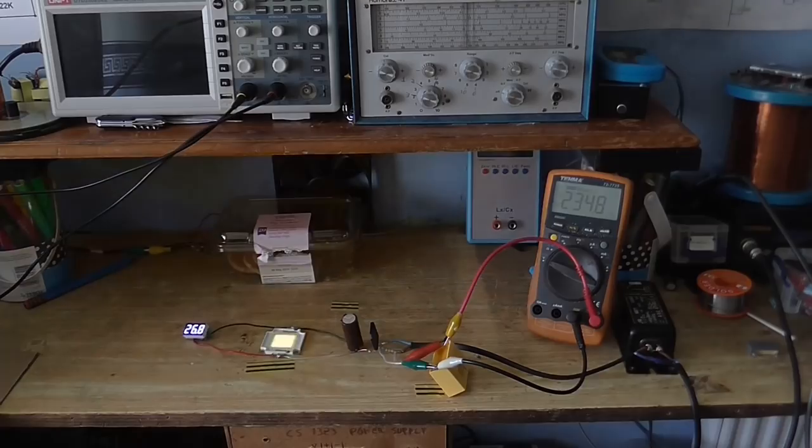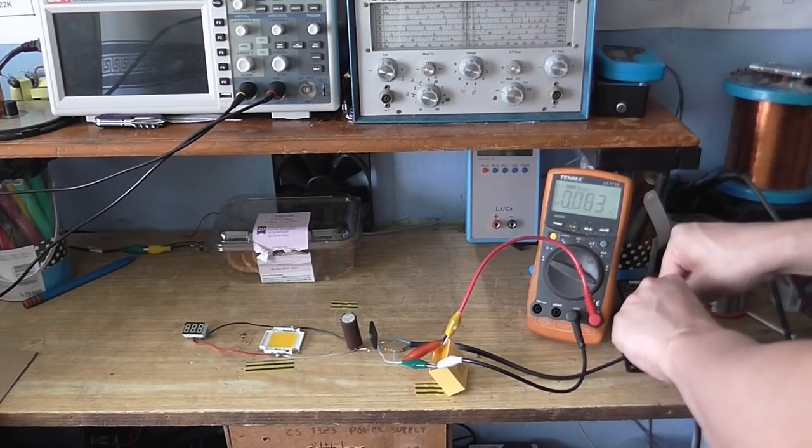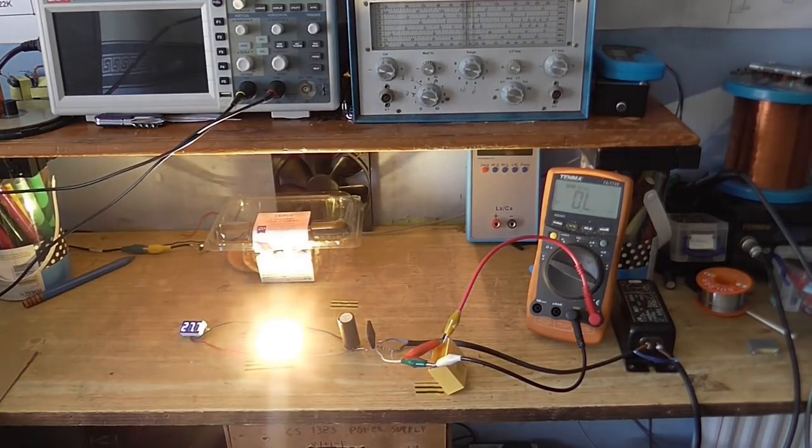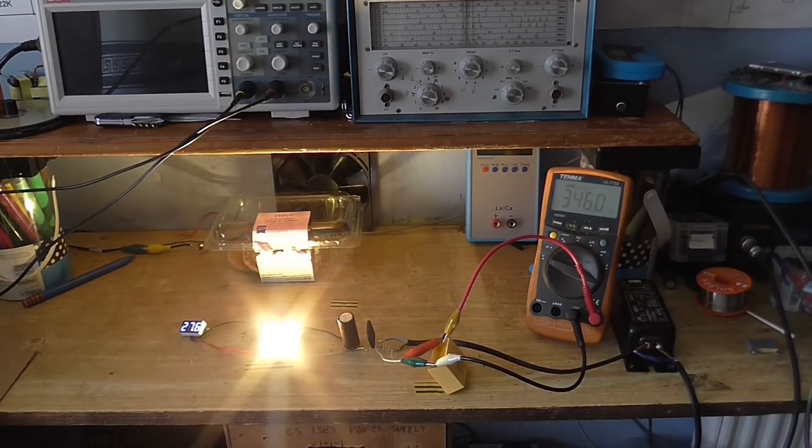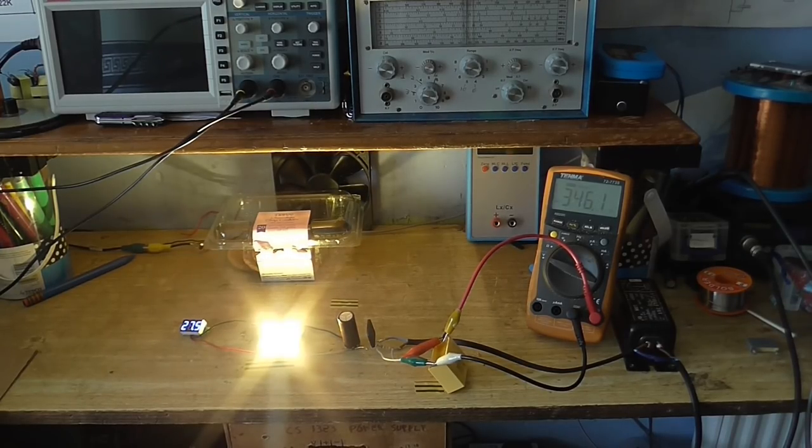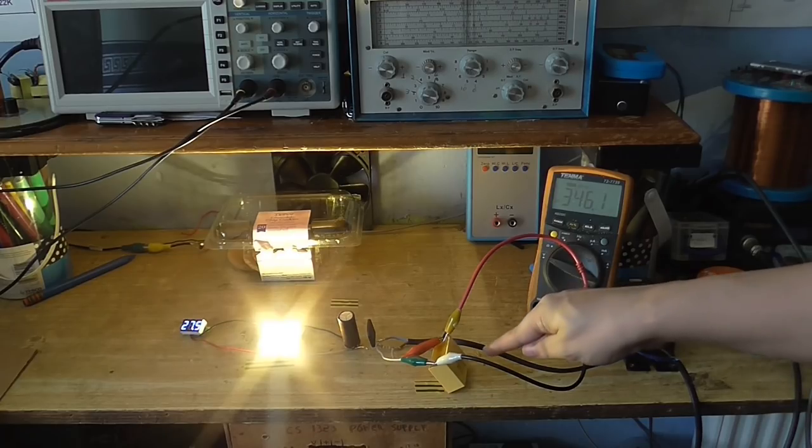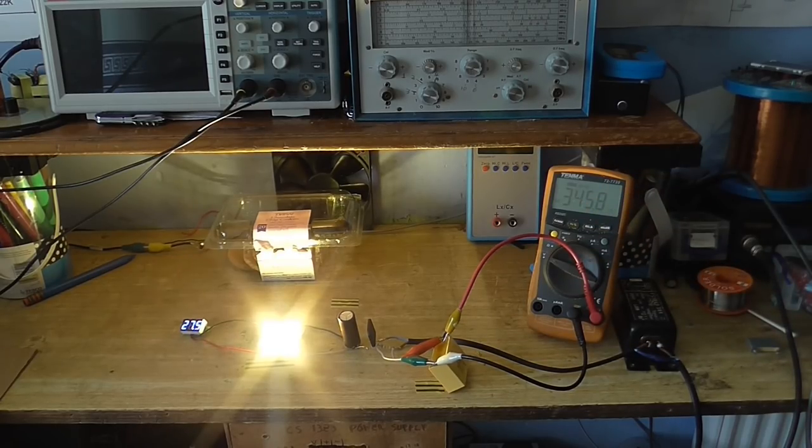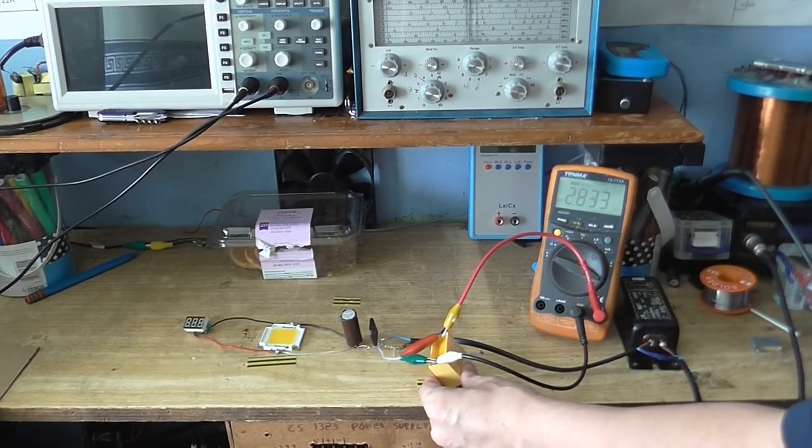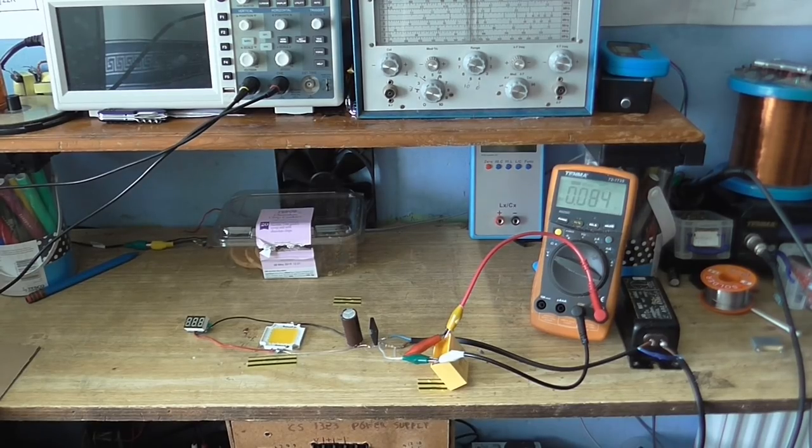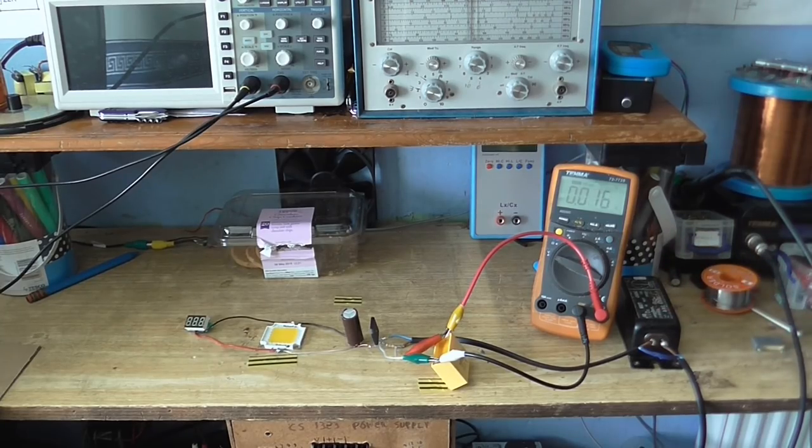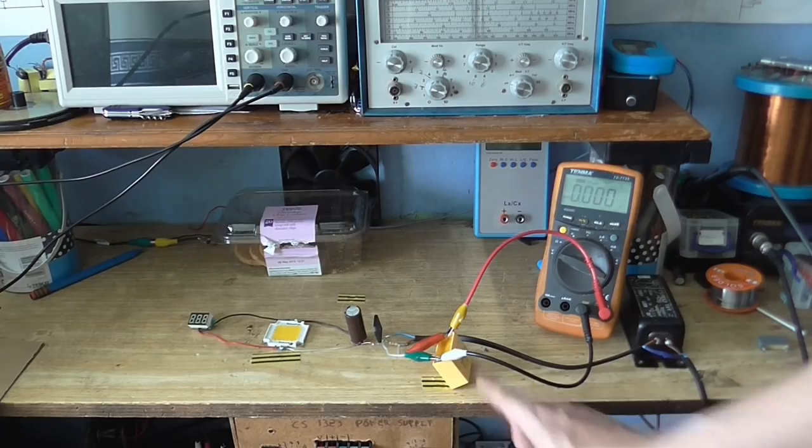But that was with the choke not in the circuit. So, I'm going to unshort the choke and plug it in again. So, this is with the choke. And you can see the voltage at the LED is a little bit higher, even though that's supposed to be reducing the current. And the voltage across our capacitor is now almost 350 volts. So, I'm going to unplug that right away, because this capacitor is only rated for 275 volts. So, we're getting a little bit of a voltage boost when we use the choke, and I think that's because of the inductive kickback. So, this capacitor was dropping way more voltage than what it's rated for.